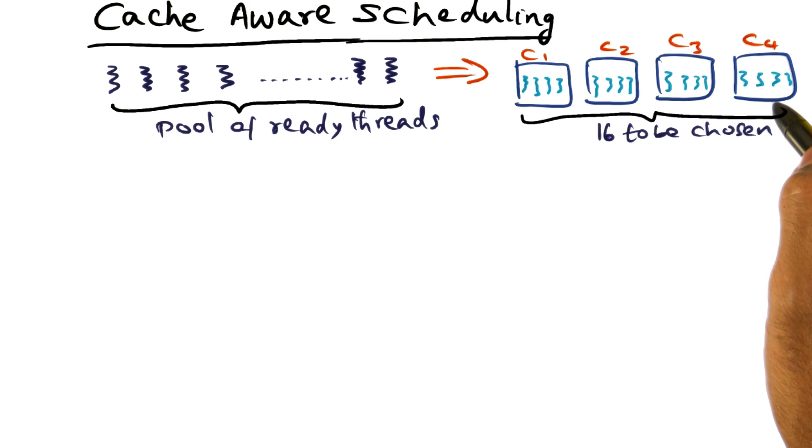Because if you miss in the last-level cache on the CPU, you're going outside the chip, out to memory, long latency operation, bad news. That's the thing that you're trying to avoid.